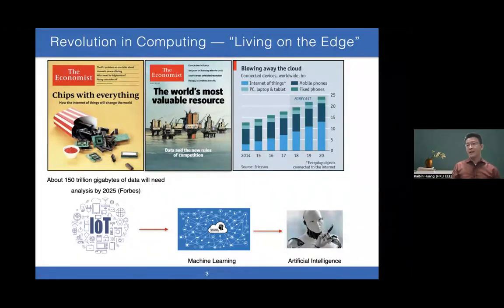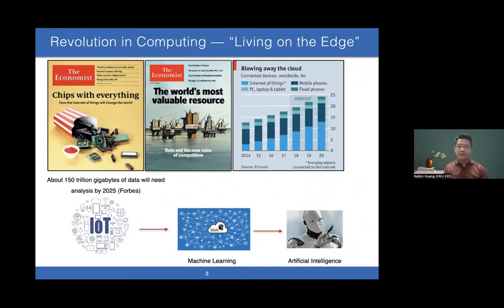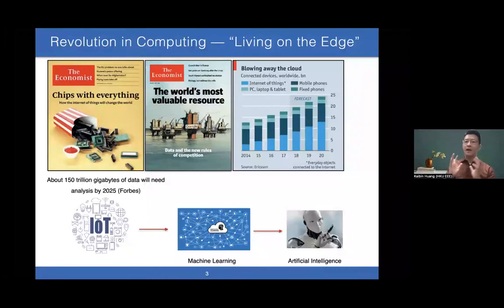Data has become the most valuable resource in the world, replacing fuel. How do we know? Look at the most valuable companies: Google, Facebook, Amazon, Tesla, Microsoft, and so on. Data is very valuable.